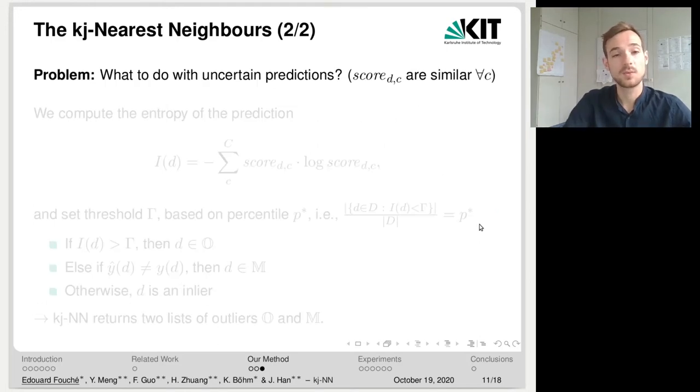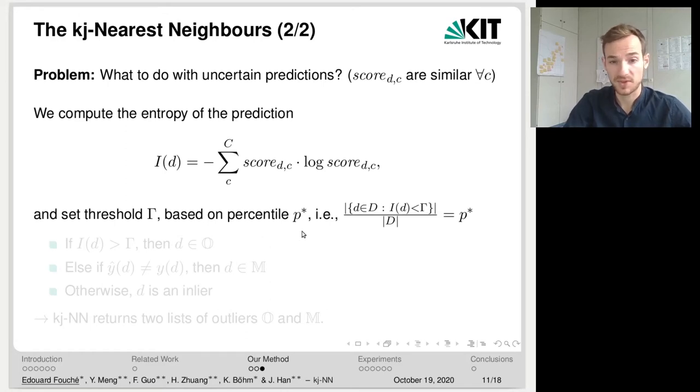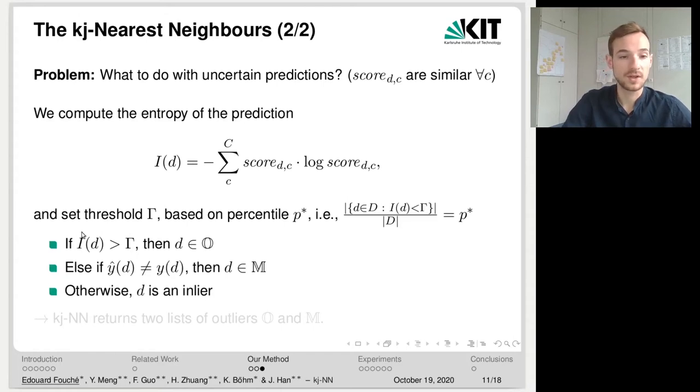Then there is still one problem. What do we do if the prediction is very uncertain? Say, all the scores are very similar for a given document with respect to other classes. Then this document does not clearly belong to any class. So we compute the entropy of the prediction and we set a threshold gamma based on percentile P*. That is to say, the proportion of documents whose entropy is smaller than gamma is equal to P*. And then we make the following decision. If the entropy of the document is greater than gamma, then d does not clearly belong to any class. And we say that d is a type O outlier.